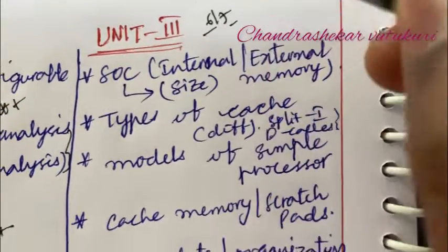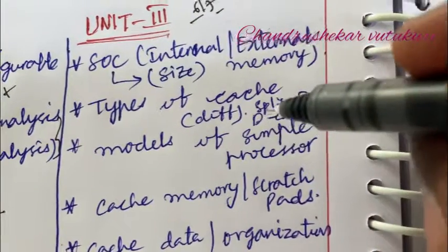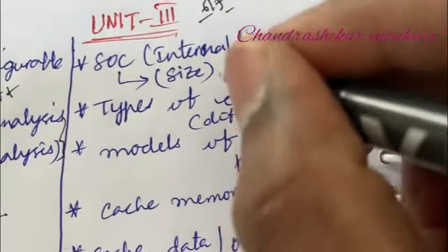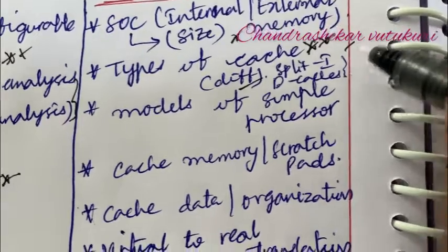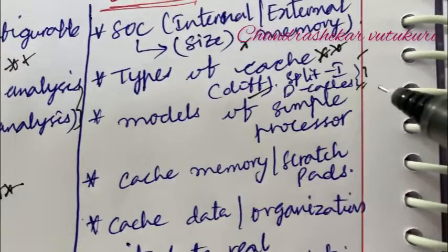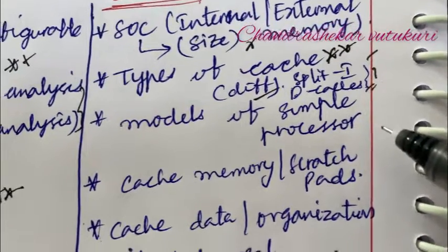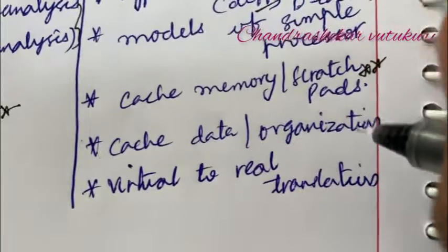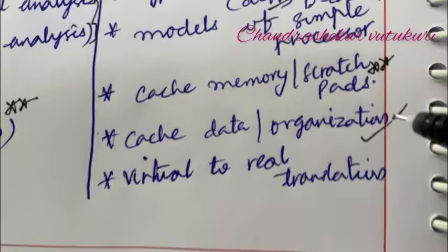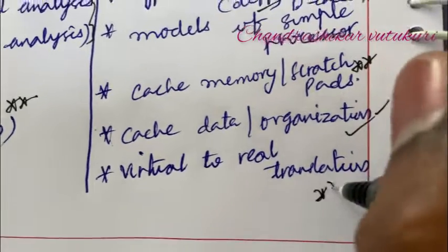It's all about questions 6 and 7. SoC internal and external memory along with its size and the types of cache is the topmost question. The differences split I and D cache may be a short question. The models of simple processor and the cache memory and scratch pads may be a short question. Cache data along with its organization is a long question. Virtual to real translation may be the topmost question.